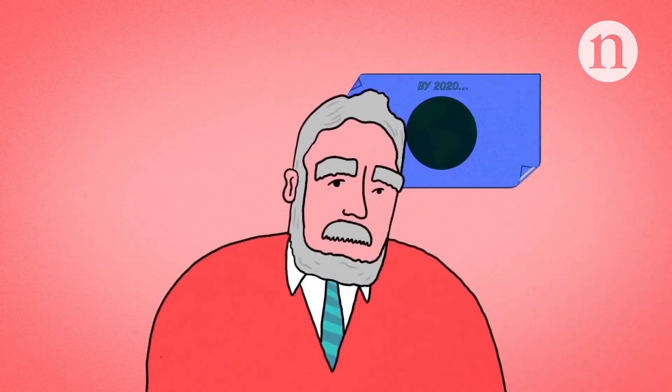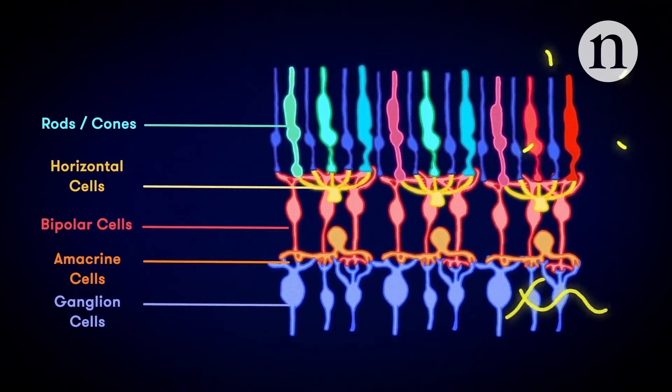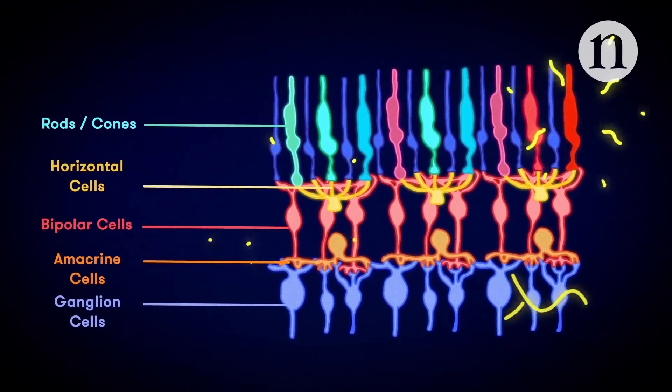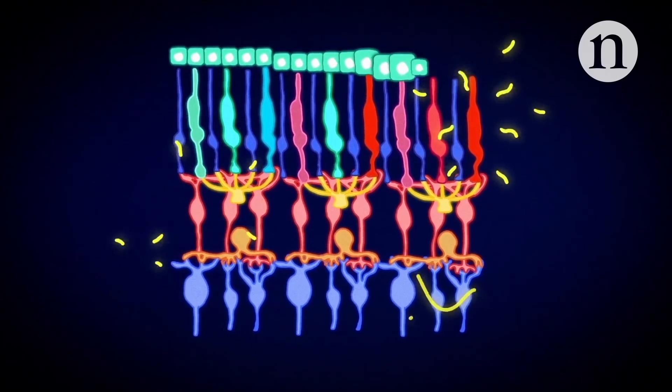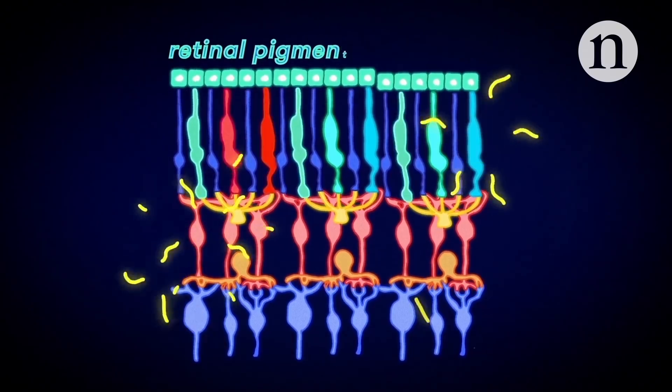The retina contains five distinct types of neurons, which are wired together into one of nature's most bewildering circuit boards. This circuitry is kept healthy by a thin layer of cells called the retinal pigment epithelium, or RPE.